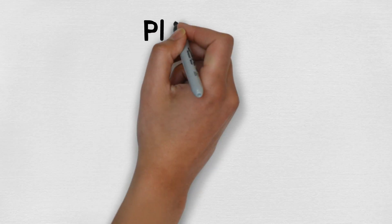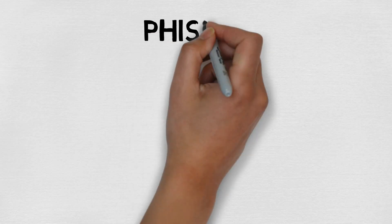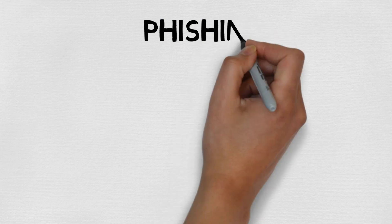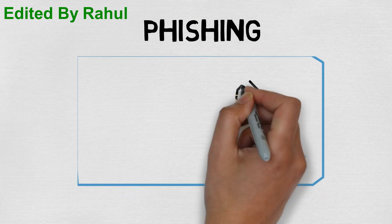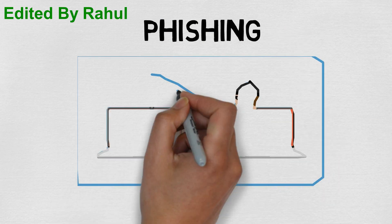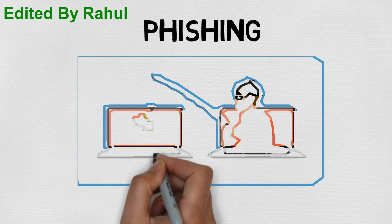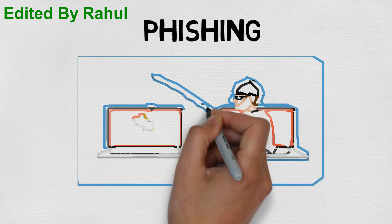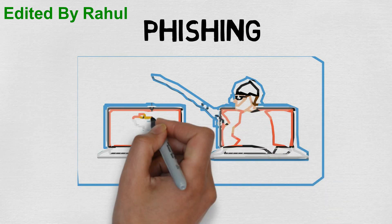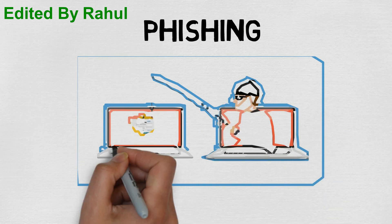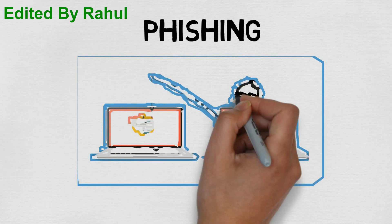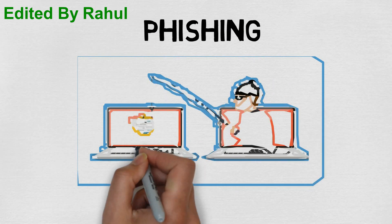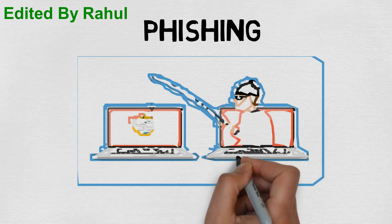Before getting started, let's first understand what is phishing. Phishing is a process used by scammers to steal sensitive information like username, password, bank account number, ATM pin, etc., through a website, email, or SMS.